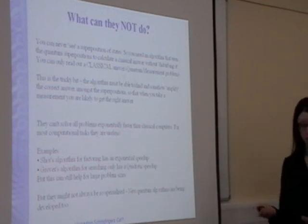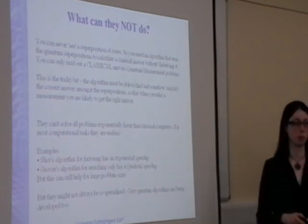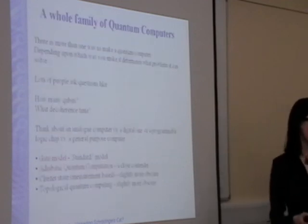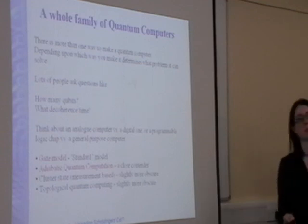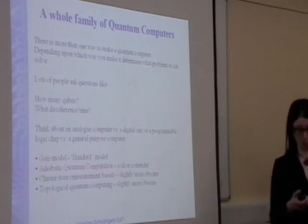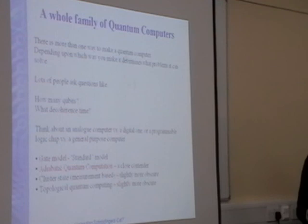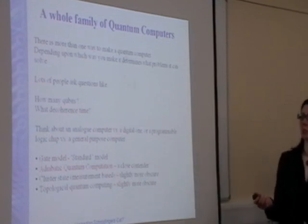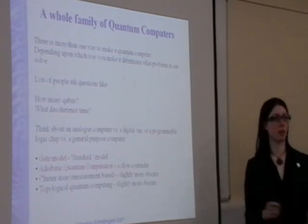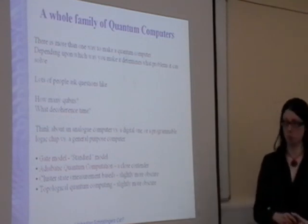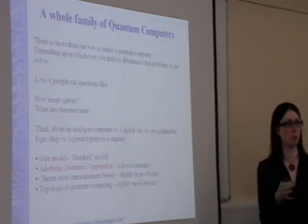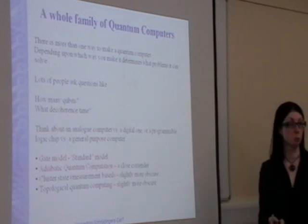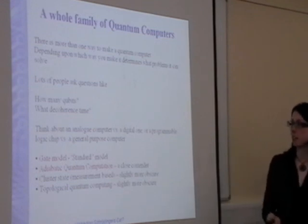There are different types of quantum computers—there's more than one way to make it. So I get asked lots of questions like, okay, so how many qubits have people made? What's the record? What's the best decoherence time that you can get in a quantum computer? Well, it's very much dependent on what type of quantum computer you're thinking about, because there's more than one computing model in this area. If you think about the difference between an analog computer and a digital computer—analog computers are very good at solving things like differential equations.